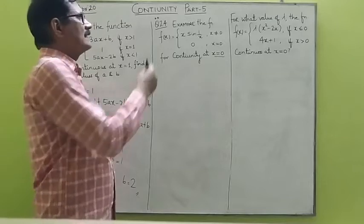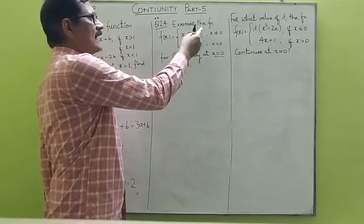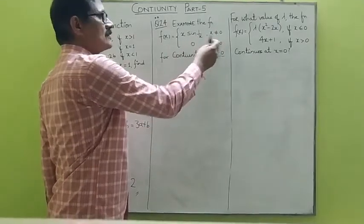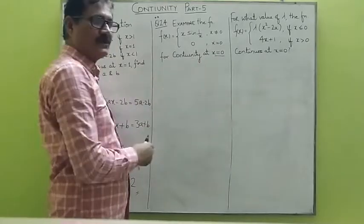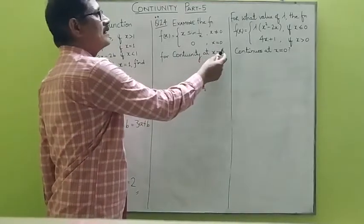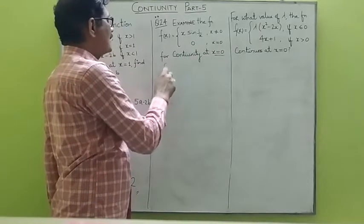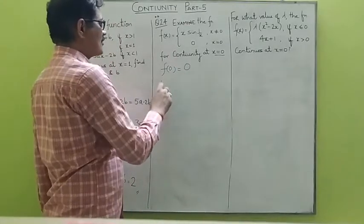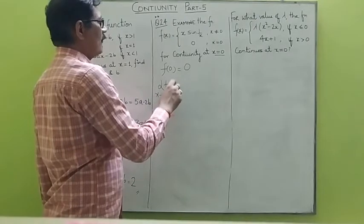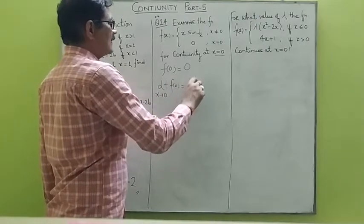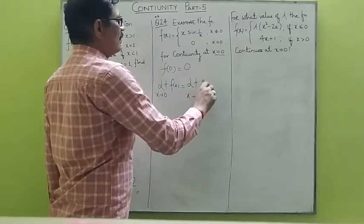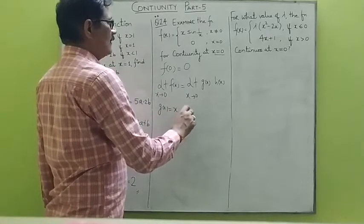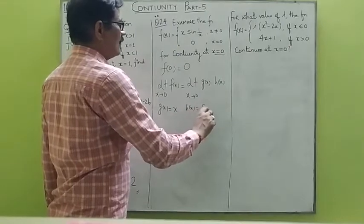Let's move on to the next problem. Examine the continuity of the function x times sin(1/x) at x not equals to 0, and equals to 0 at point x equals to 0, for continuity at point x equals to 0. The point where continuity has to be checked is x equals to 0, so the value of the function at 0 is given as 0. We need to find the limit as x tends to 0 of f(x), which we can write as limit x tending to 0 of g(x) times h(x), where g(x) equals x and h(x) equals sin(1/x).